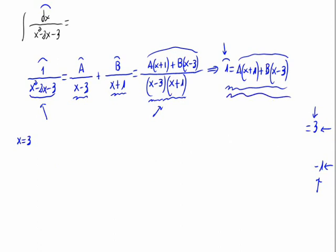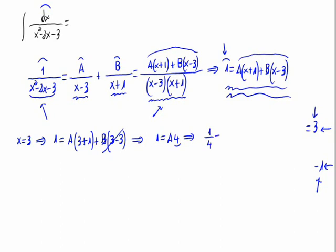Substituting x equals 3 into the equation, we have: 1 equals A times (3 plus 1) plus B times (3 minus 3). Since 3 minus 3 is 0, the B term disappears. So 1 equals A times 4, which gives us A equals 1/4.